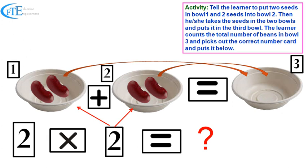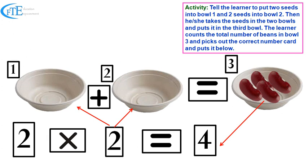Then they need to take all the counters from bowl one and put them in the third bowl, and all the counters in bowl two and put them into the third bowl. Then get the learner to count the number of seeds or counters in the third bowl and write the answer.